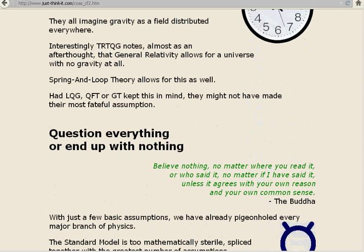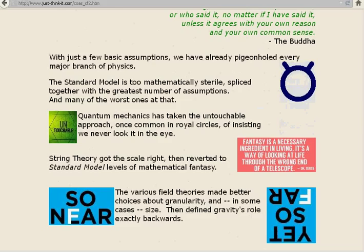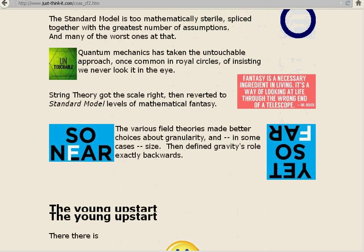With just a few basic assumptions, we have already pigeonholed every major branch of physics. The standard model is too mathematically sterile, spliced together with the greatest number of assumptions, equations, and many of the worst ones at that. Quantum mechanics has taken the untouchable approach, once common in royal circles, of insisting we never look it in the eye. String theory got the scale right, then reverted to standard model levels of mathematical fantasy. Fantasy is a necessary ingredient in living. It's a way of looking at life through the wrong end of a telescope. Dr. Seuss. The various field theories made better choices about granularity, and in some cases, size, then defined gravity's role exactly backwards.